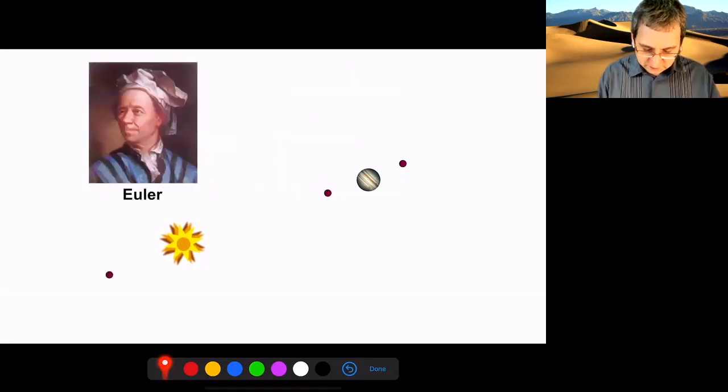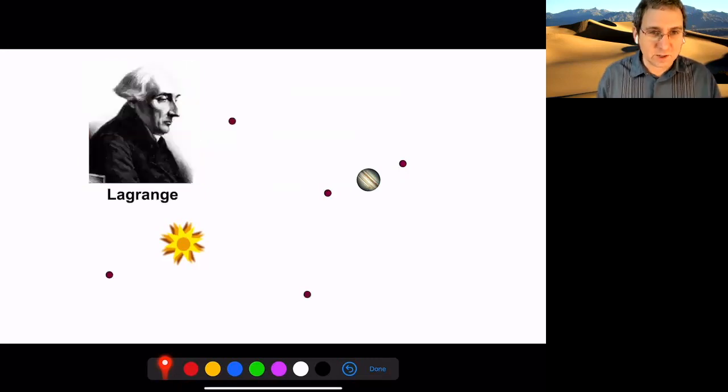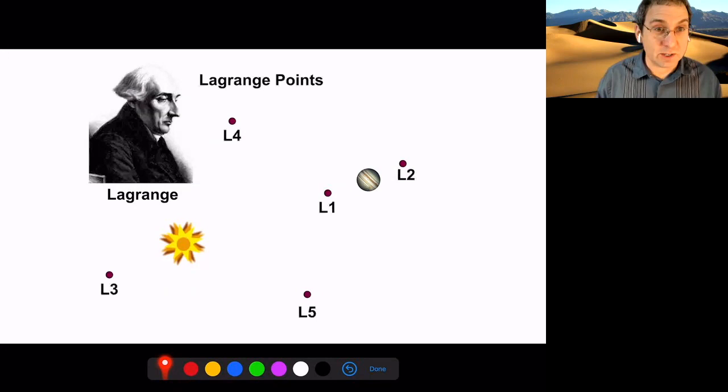So Euler said, oh, there's actually three points. And then Lagrange came along and said, oh, there's three plus two. So his name got assigned to all the points, so they're called Lagrange points. So they're L1 through L5. In the late 1800s,